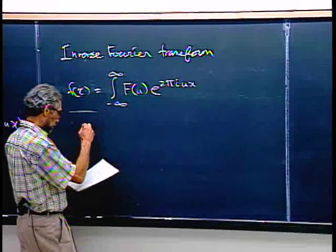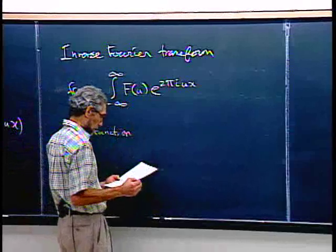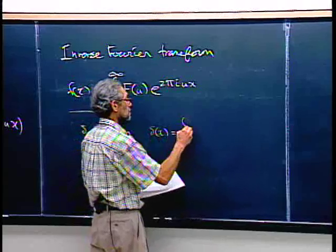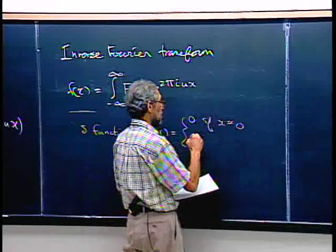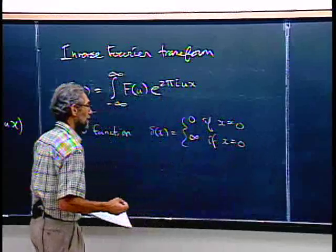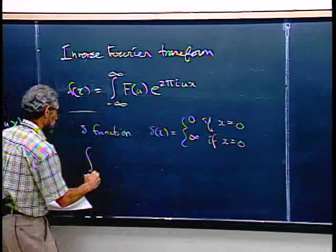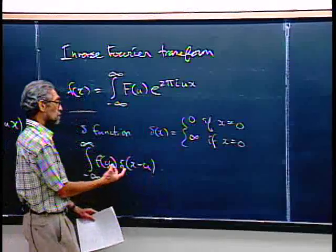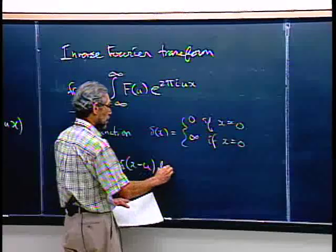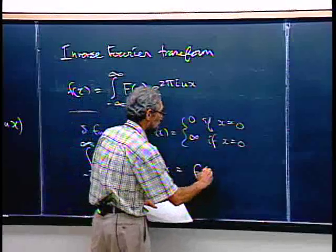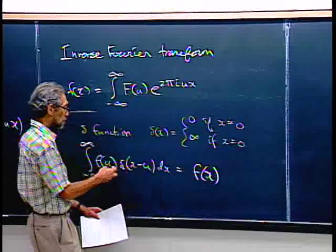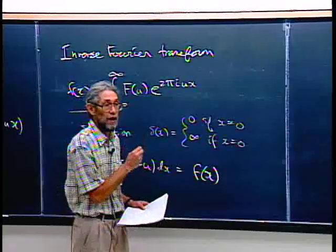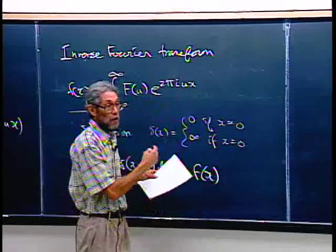The delta function, or impulse function, has the property: delta of x equals zero if x is not equal to zero, and something infinite at x equals zero. The definition says that if you integrate it against any function, delta of x minus u picks out the value at x equals u. It's infinite just enough to make the result equal f of x. Think of it as a limit of steeper and narrower bumps whose integral adds up to one.